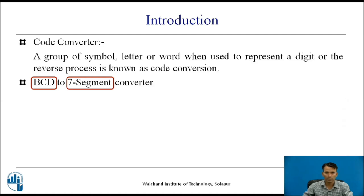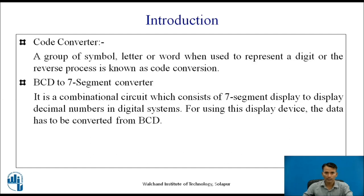BCD to 7-segment converter is a combinational logic circuit which consists of 7-segment display to display decimal numbers in digital systems. For using this display device, the data has to be converted from the BCD number. Such BCD to 7-segment converters are used in electronic calculators, watches, and many more digital systems.